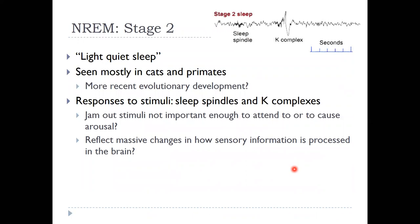With stage two, transitioning from stage one's drowsy period to a light, quiet sleep, we see something very specific that we don't see much in other types of sleep — particularly in cats and primates. We see sleep spindles and K-complexes. We don't know a ton about them, but I'm going to briefly mention that they are seen in sleep. A spindle shows as very bold, dark activity, and a K-complex appears as a big dip.